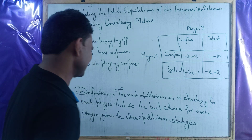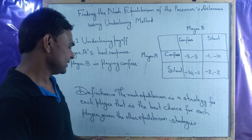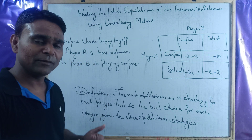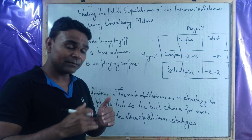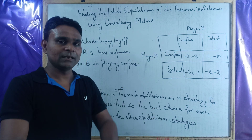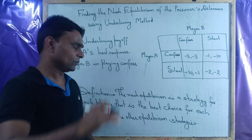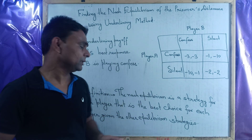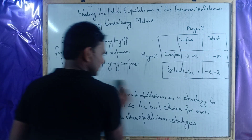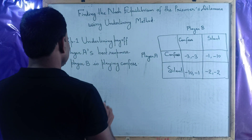This is the definition of Nash equilibrium. In other words, we can say it is the best choice. If there may be more than one equilibrium strategy, the Nash equilibrium is the best equilibrium strategy among them, among other level equilibrium strategies. Now the definition is over, it is time to move back to the solution.